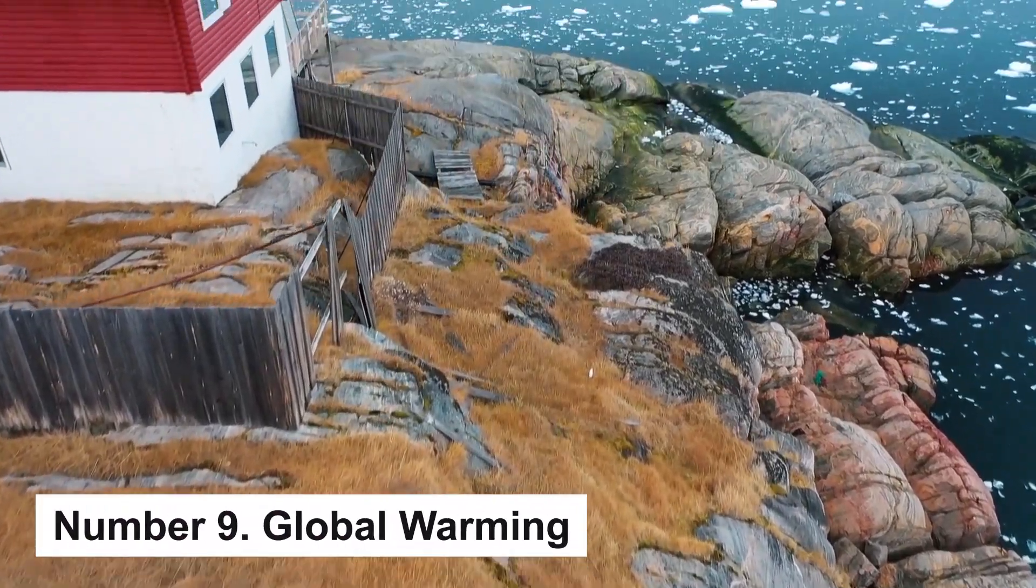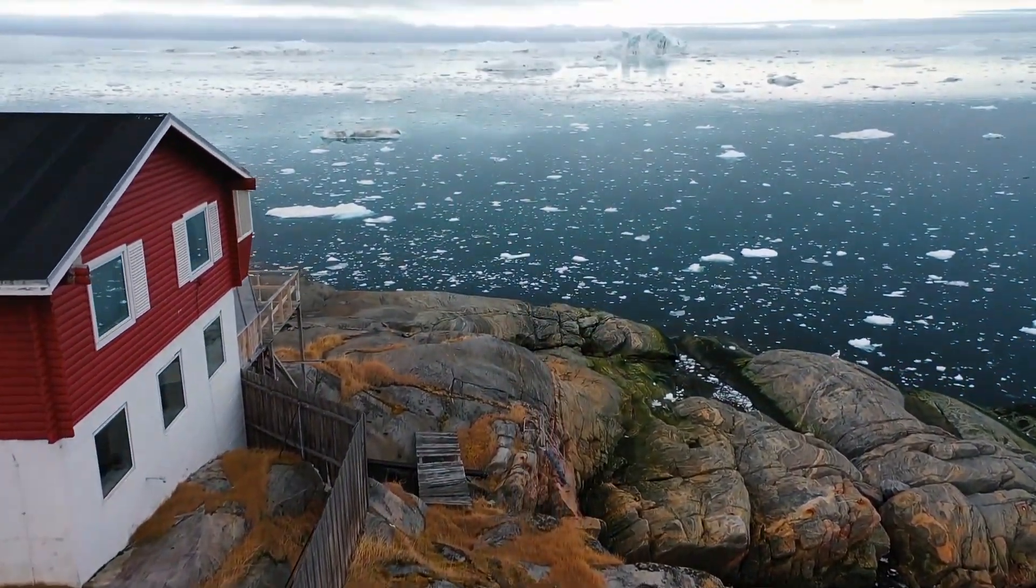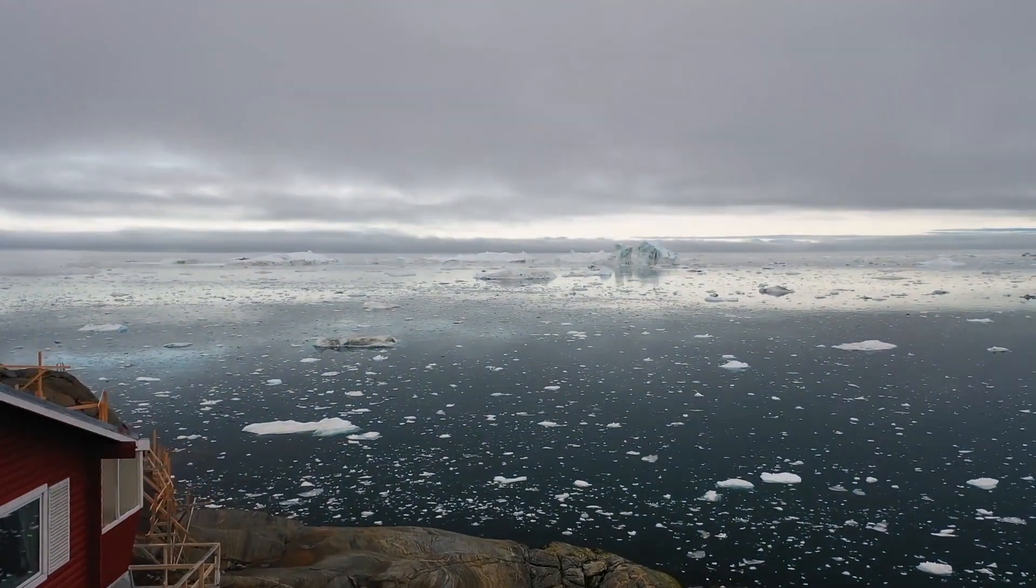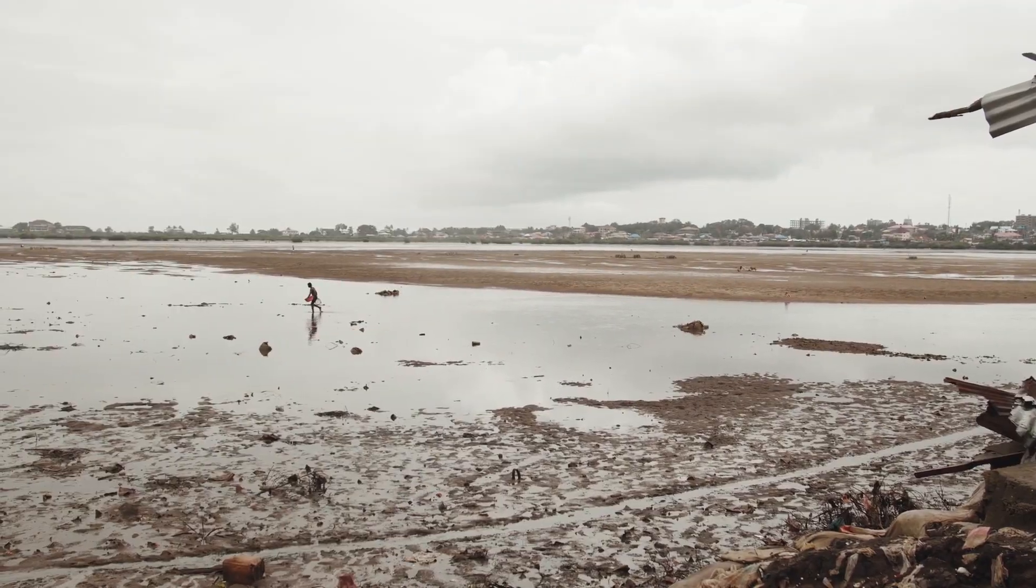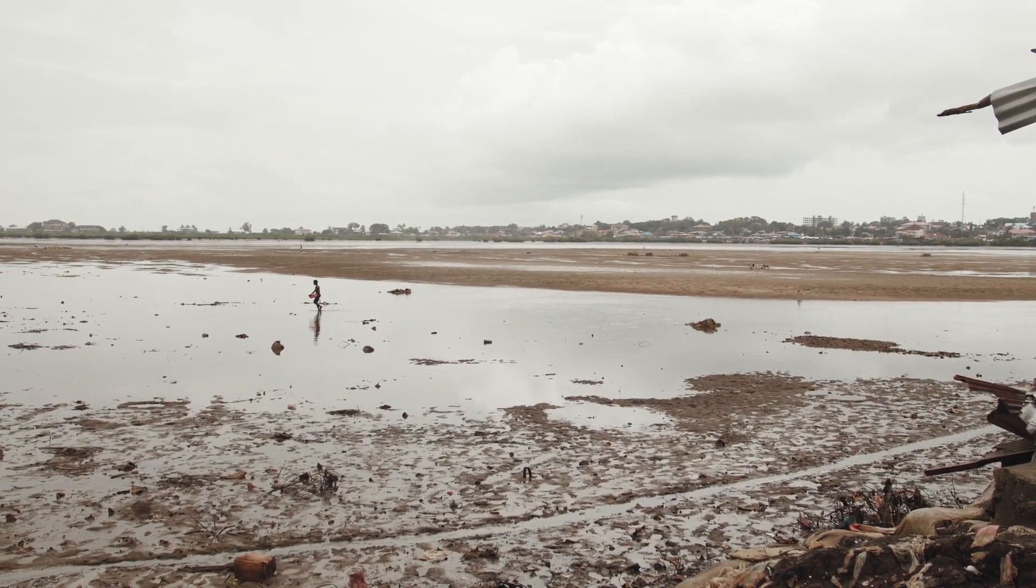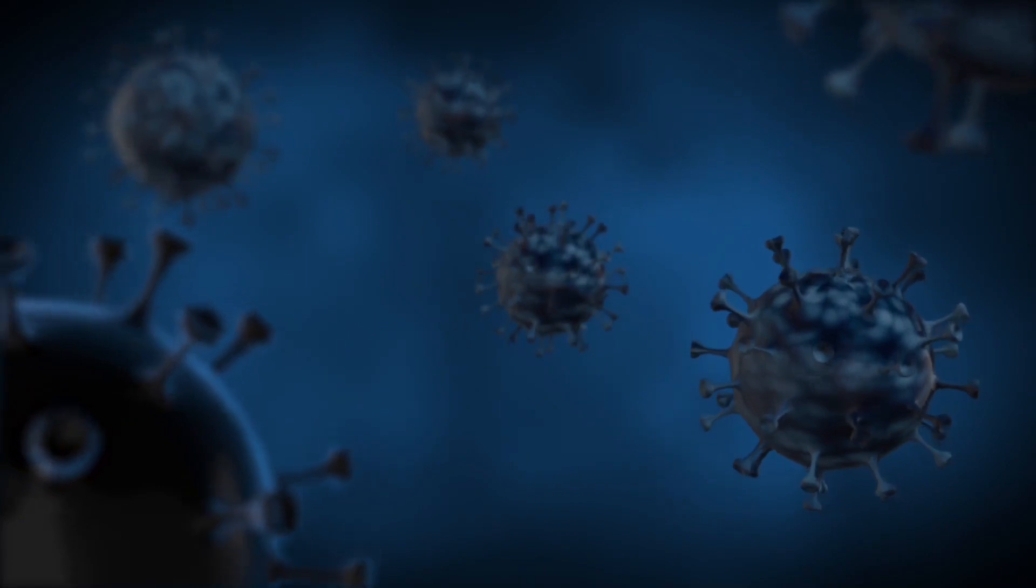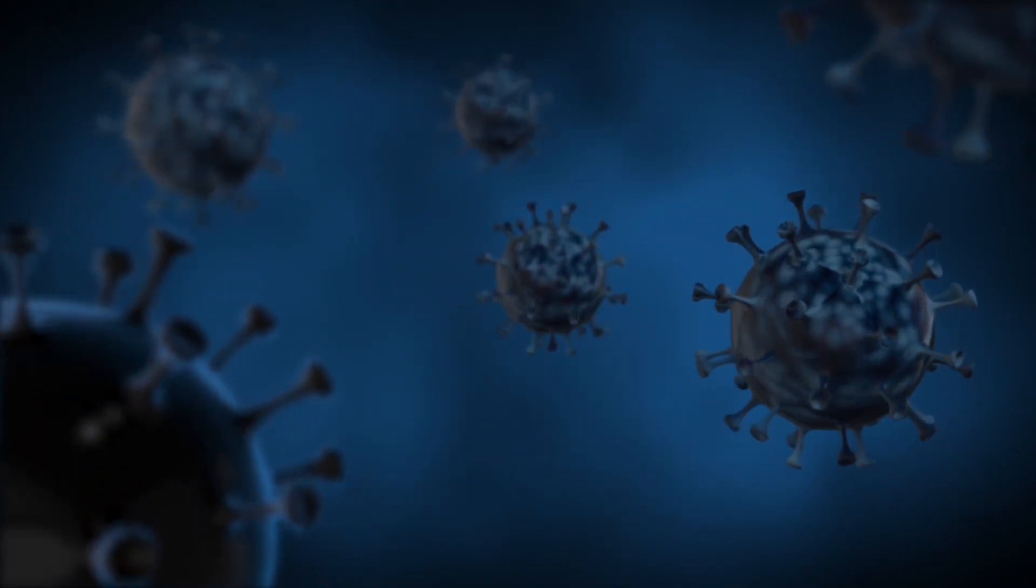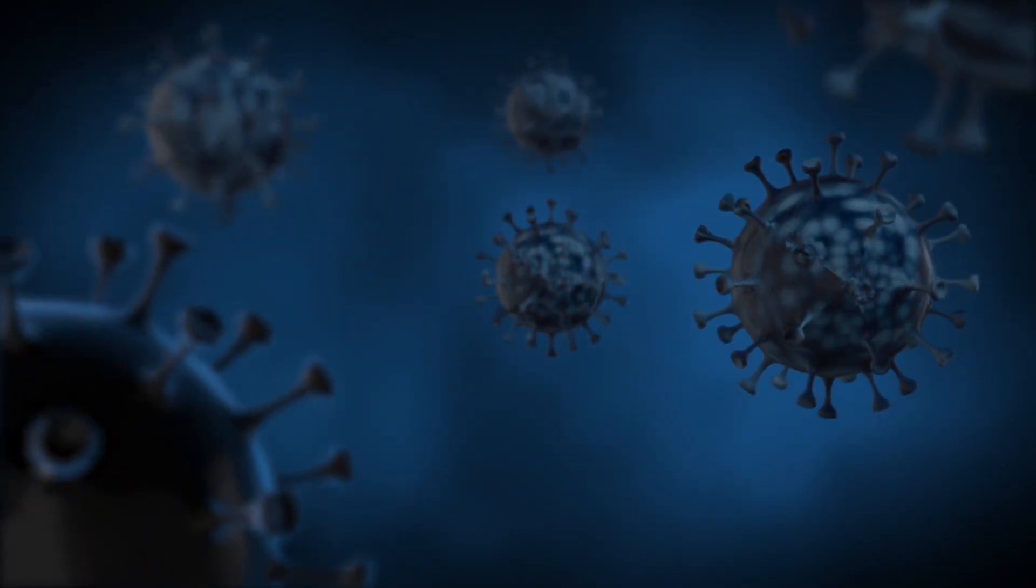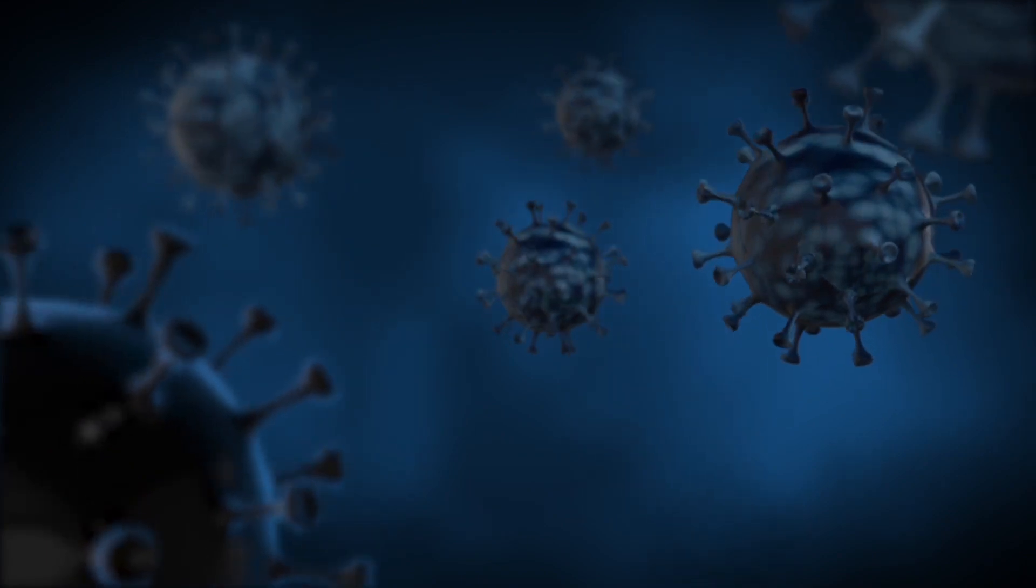Number 9: Global Warming. The Earth is warming and scientists generally believe that people are to blame. It's easy to see how global warming could cause cities to flood and crops to fail. Recently, Harvard Medical School professor Paul Epstein has raised the alarm that a warmer world could also aid in the spread of infectious disease by providing a more favorable temperature for parasites and increasing the range of tropical viruses.